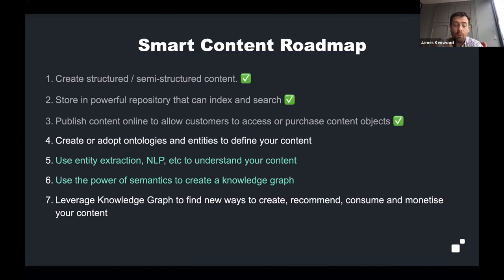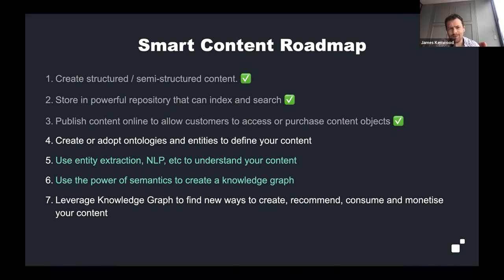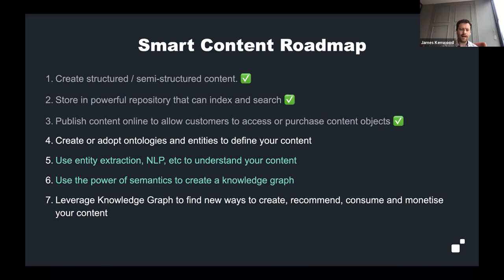Most of you are probably MarkLogic customers on this call already, and therefore you're probably already somewhere on this journey. You've already got your content in a semi-structured or structured manner, you're storing it in MarkLogic, indexing it, and making it available to search in some way. The last session was focused on ontologies and taxonomies and the value of those for smarter content. Today's session assumes you've got one of those in place — what can we do with it? How do we add that knowledge and build on top of it?